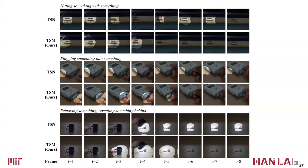TSM automatically learns spatial-temporal detectors even when trained only with classification labels. Comparing TSM attention to a 2D CNN baseline: for 'plug something into something,' TSM performs temporal reasoning, highlighting only the first frames when the plugging event occurs, while the 2D baseline doesn't know the temporal range of the action. For 'hitting a box,' TSM focuses only on the first four frames where hitting occurs, while 2D baseline circles all frames — demonstrating that TSM automatically emerges as a spatial-temporal object detector.